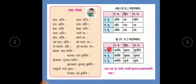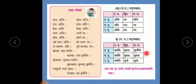Similarly for the verb 'kru': prathampurush (third person: he, she, it) — karoti, kurutah, kurvanti; madhyampurush (second person: you, you both, you all) — karoshi, kurutah, kurutha; uttampurush (first person: I, we both, we all) — karomi, kurvah, kurmah.